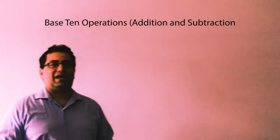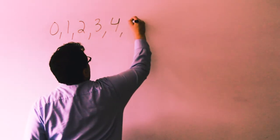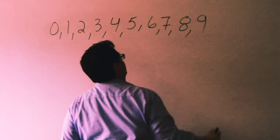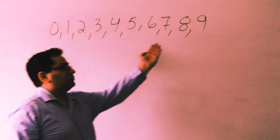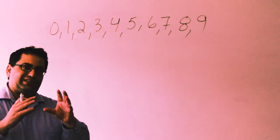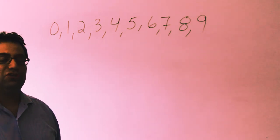Our first topic is base 10 operations. Our number system is considered base 10, and there's a reason why they call it base 10: there are 10 numerals in our number system. With these 10 numerals you can make any number in our number system. Because of this, 10 is a magic number — we can use the power of base 10 operations to do mental math.